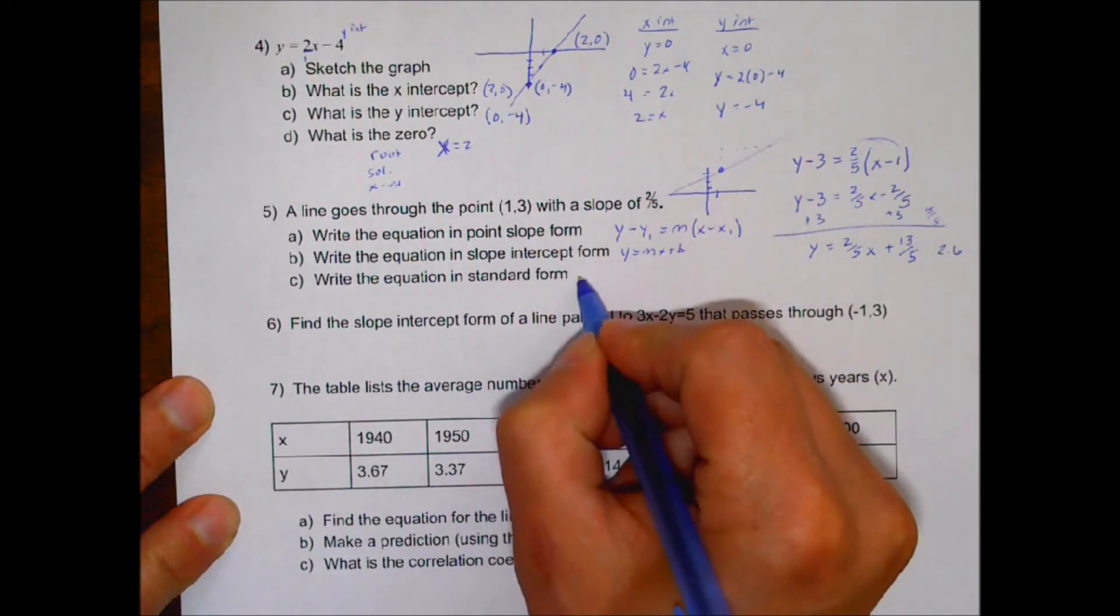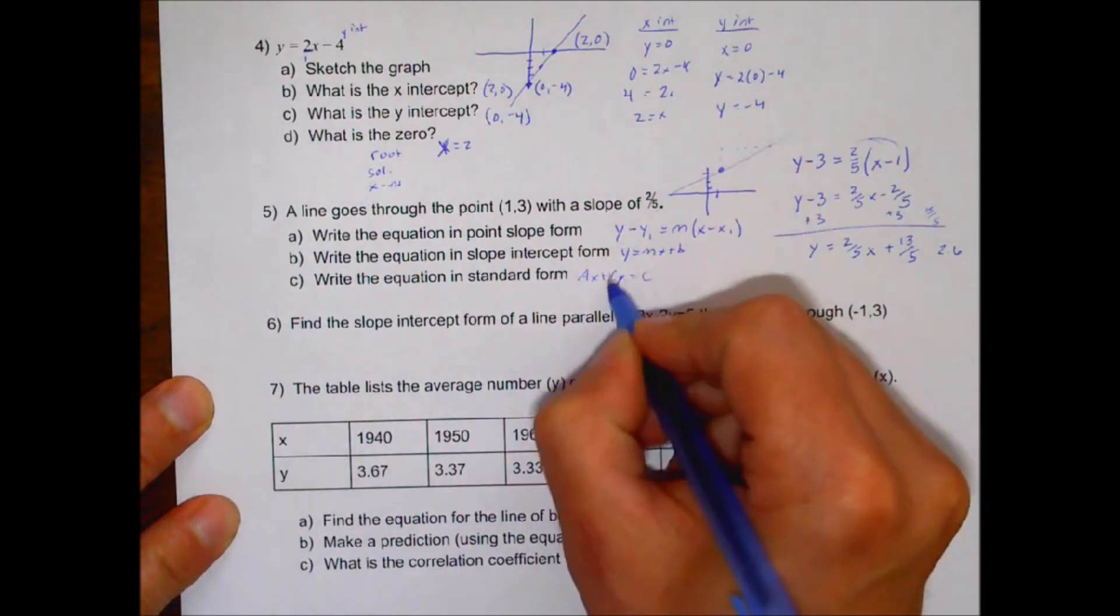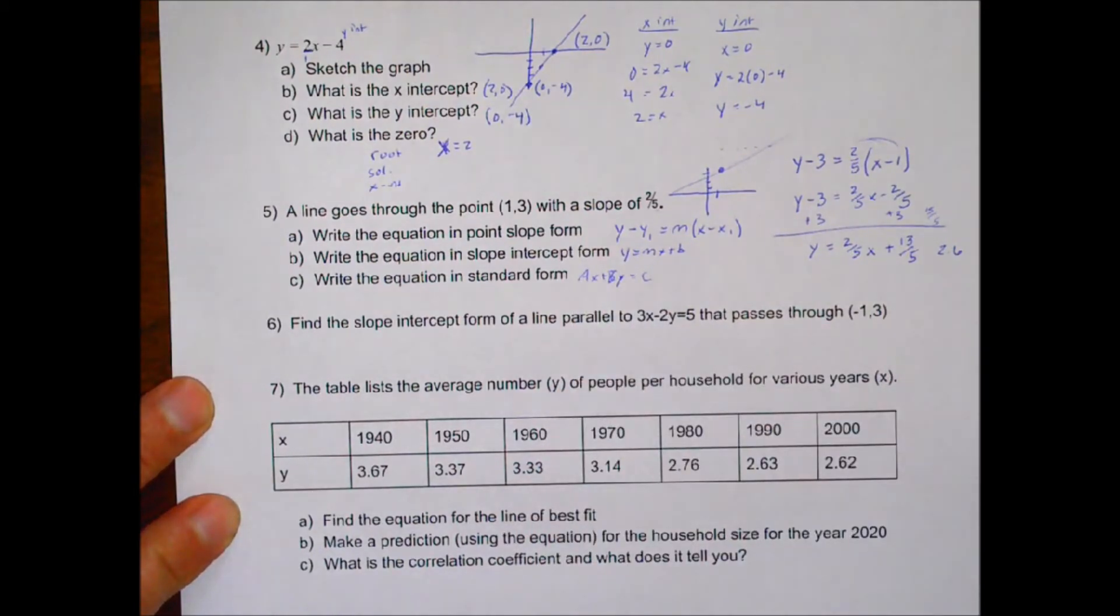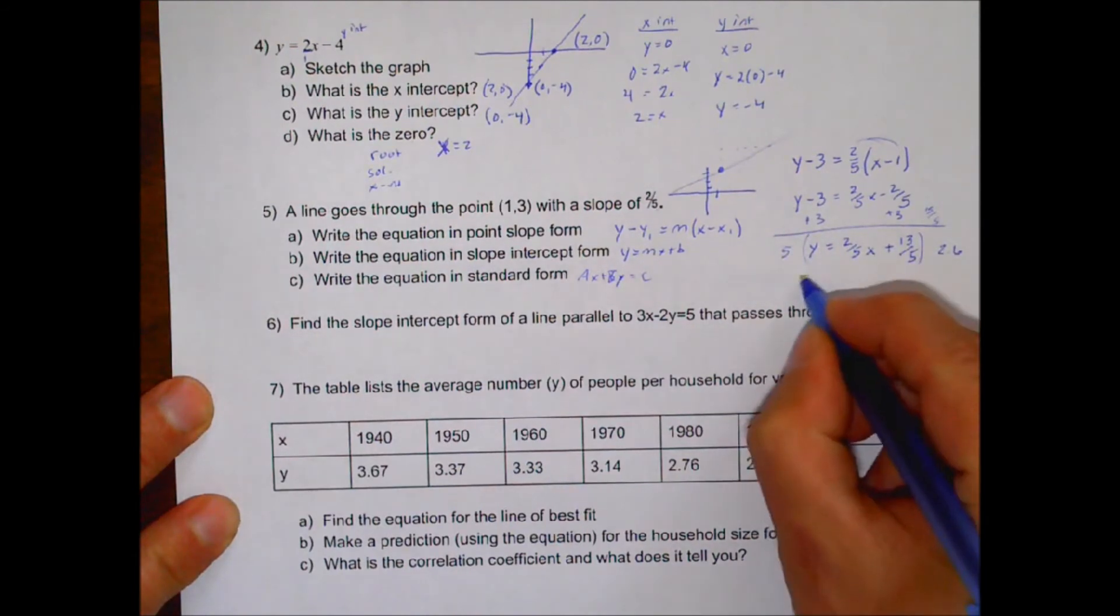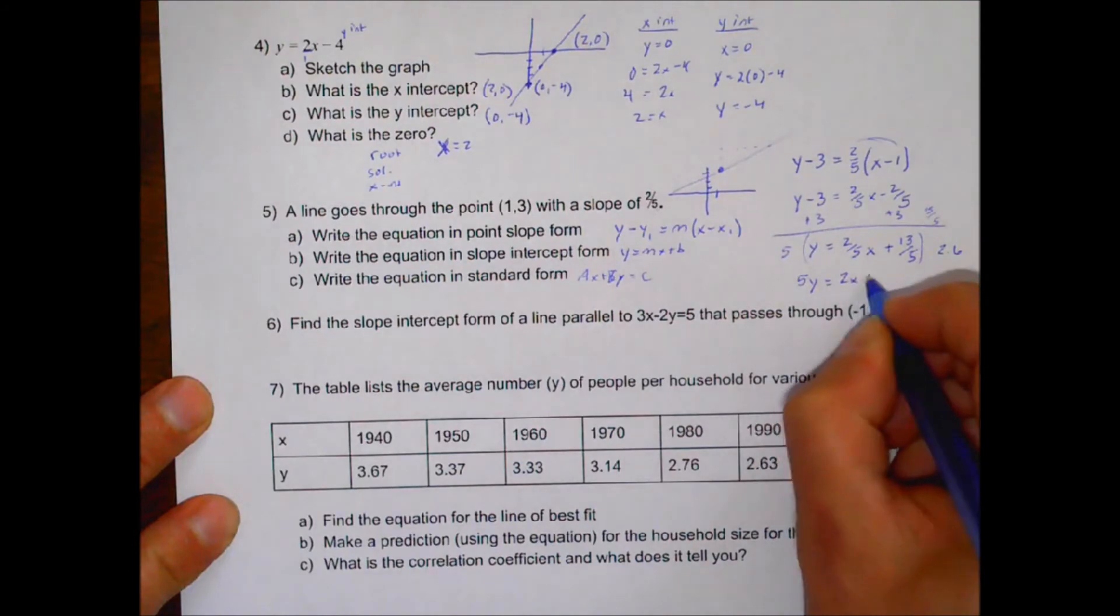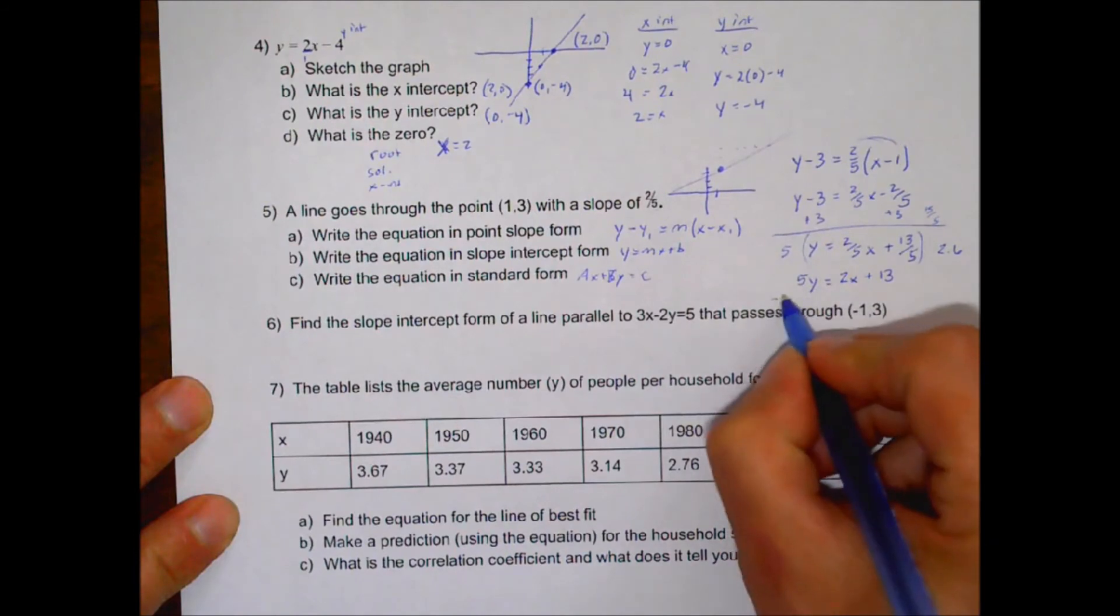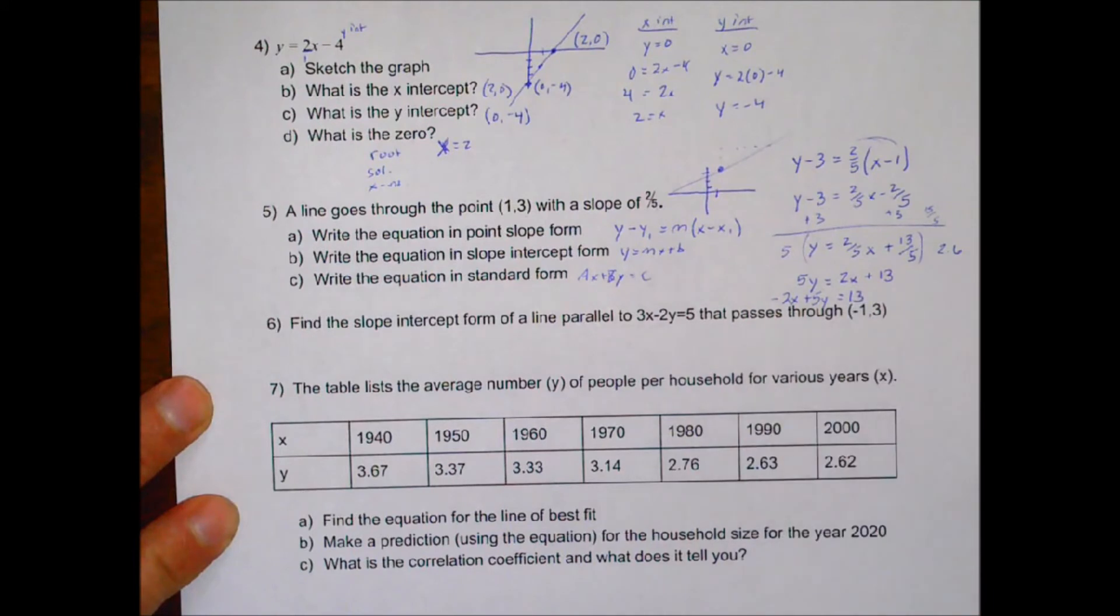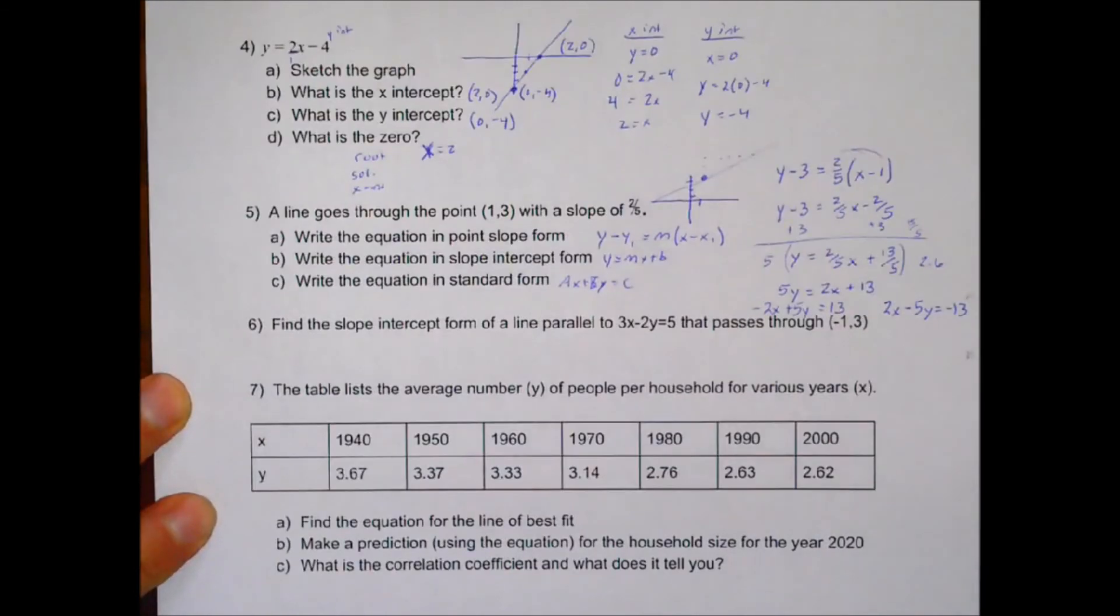Standard form has your x's and y's on the same side. And a, b, and c cannot be fractions. We want them all to be integers. So the first thing I would do here is I would multiply to get rid of the fraction. So you got 5y is equal to 2x plus 13. You multiply everything by 5. And then you get x by itself. You can bring that, subtract that 2x over. Negative 2x plus 5y equals 13. Or if you multiply everything by negative 1, you'd have 2x minus 5y equals negative 13, which is the same thing. So you have your three different forms.